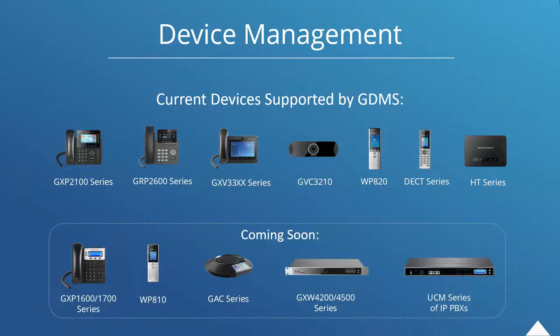Current devices that are supported by the GDMS: we have the 2100 series, 2600, 33 series, our 3210, 820, DEX series, and HT series. Please just be aware right now — these are all the devices that will be supported once the GDMS is fully launched, which should be later here in October or early November, as it is currently still in beta.